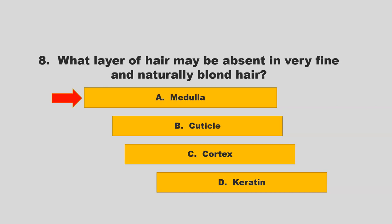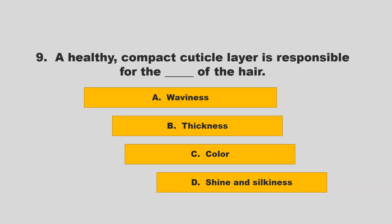A healthy, compact cuticle layer is responsible for the blank of the hair. Is it waviness, thickness, color, shine, or silkiness? If you chose D, shine and silkiness, you are correct.